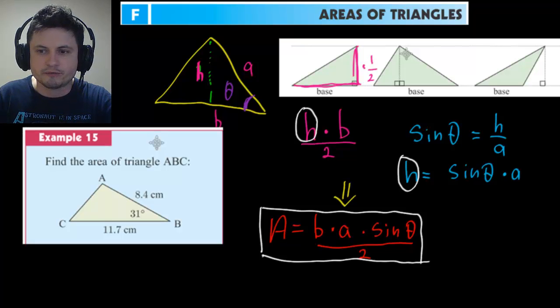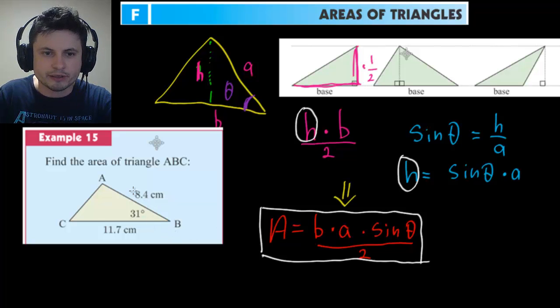And right here we have Example 15 from your book and it's giving you triangle ABC and it's asking you to find its area. There's a side right here, just like the side that we had before. There's a side right here and there's the angle between them.